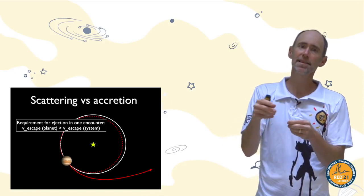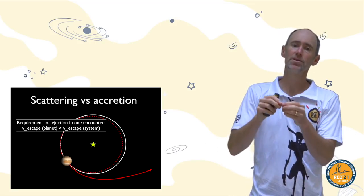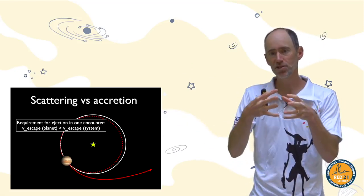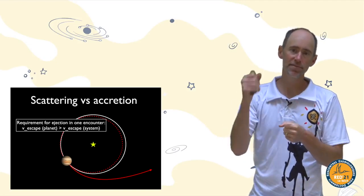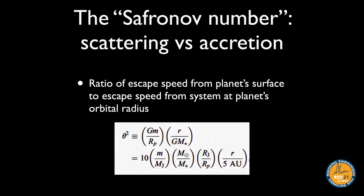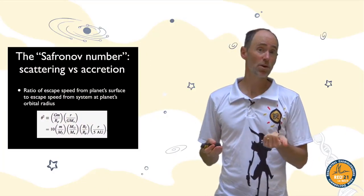If the escape speed from the planet's surface is much larger than the escape speed from the system, one gravitational kick can eject something. If it's much less, ejection is very hard. The ratio of those two quantities is sometimes called the Safronov number — simply the ratio of the planet's surface escape speed to the system escape speed at that distance. For Jupiter the Safronov number is about 10; for Earth it's much less than one.